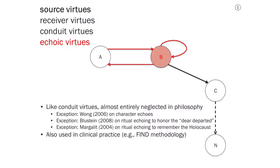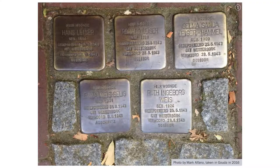An echo virtue that's been investigated to some extent in clinical practice is the FIND methodology, which I'll mention just in a second. First, I want to show you an example of an echo virtue related to the Holocaust. This is a picture that I took in the town of Gouda in the Netherlands this year. These are Stolperstein, which means stumbling blocks or stumbling stones. And there are thousands of these now throughout Europe that have been placed in the ground in front of the houses where Jews were last living before they were taken to concentration camps and death camps. And the point with these is that they're very simple, they're easy to miss, and that's what makes them stumbling blocks in a way. But they ensure that we don't forget these people who were killed during the Holocaust.